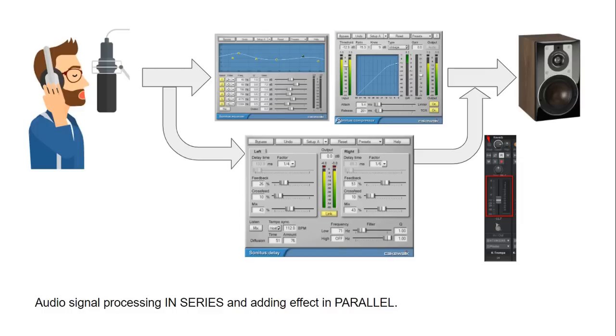And in most cases we are able to decide how much of the parallel signal is mixed or added to the original signal, whether it was direct or in series processed as well. Of course there is no reason why you cannot use a compressor or an equalizer in parallel with the direct signal to achieve the expected result.